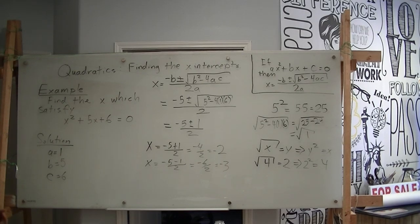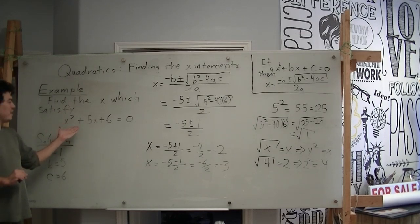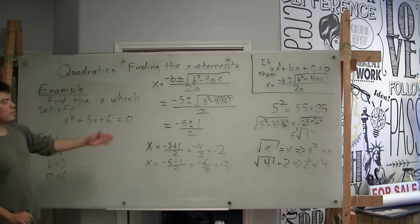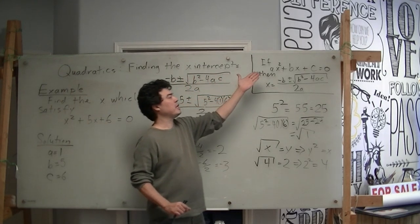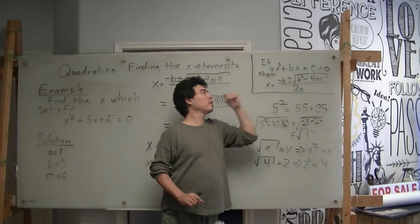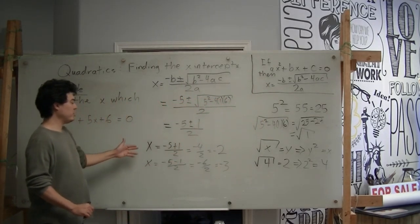By the way, just so you know, roots, x-intercepts, and zeros are synonyms for the x's that make this equation x squared plus 5x plus 6 equal to 0. Or in general, ax squared plus bx plus c equals 0. And so these are those values.